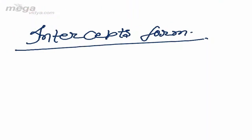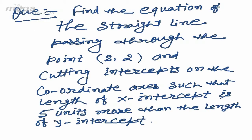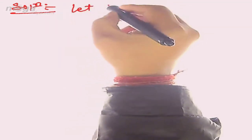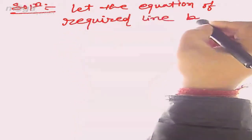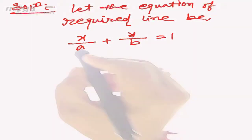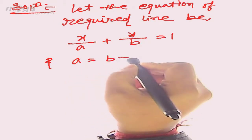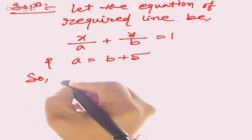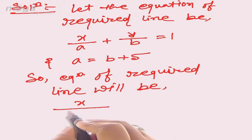Now I'm taking another example based on the intercepts form. The question is: find the equation of the straight line passing through the point (8, 2) and cutting intercepts on the coordinate axes such that the length of the x-intercept is 5 units more than the length of the y-intercept. So we suppose the equation of the required line in intercepts form as x/a + y/b = 1, where a = b + 5.